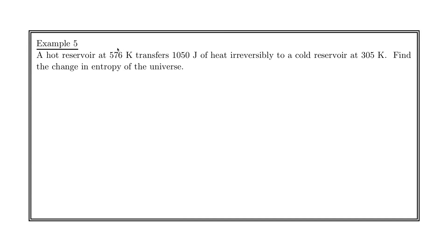A hot reservoir at 576 Kelvin transfers 1,050 joules of heat irreversibly to a cold reservoir at 305 Kelvin. Find the change in entropy of the universe. With reversible processes, heat is added and then taken away from a system in a completely reversible manner, so the change in entropy of the universe is zero — it becomes more disordered, then less disordered, going back and forth. But when a process is carried out irreversibly, the entropy of the universe does change.